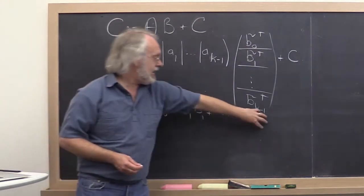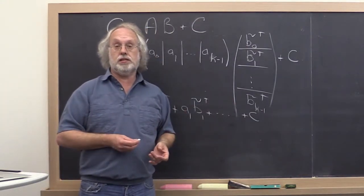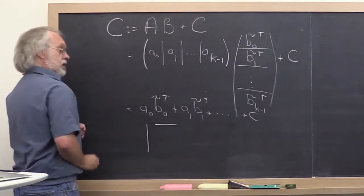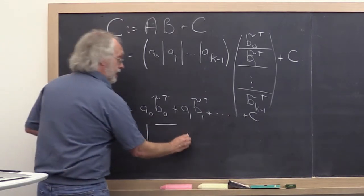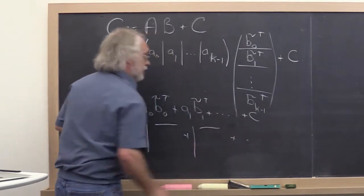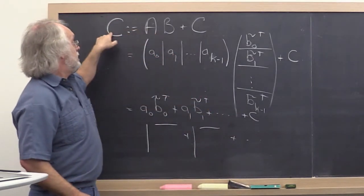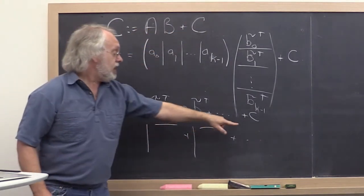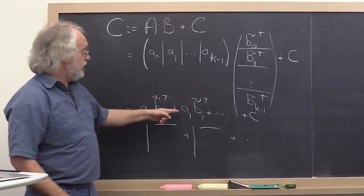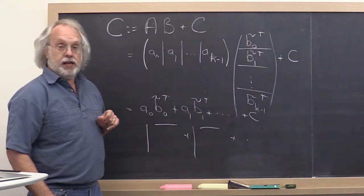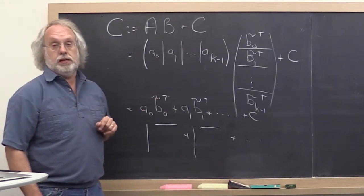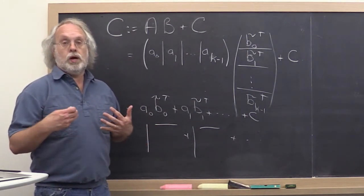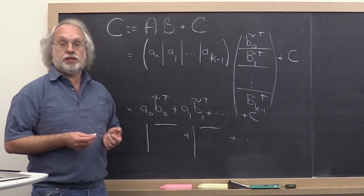Now this you recognize as the rank-1 update that we discussed in the last unit. So what this says is, this is a column times a row added to a column times a row, etc. One way of viewing C becomes A times B plus C is to think of it as a sequence of rank-1 updates where each rank-1 update involves a column of A and a corresponding row of B. And as I pointed out, that turns out to be the key to high performance when we target registers and instruction level parallelism.